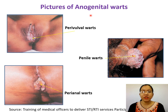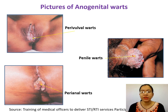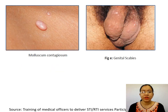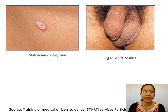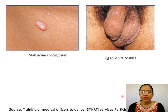These are pictures of anogenital warts: perivalvar warts, penile warts, and perianal warts. This is the picture of molluscum contagiosum—you can see the umbilication, which is the hallmark characteristic of molluscum contagiosum. This is a picture of genital scabies.